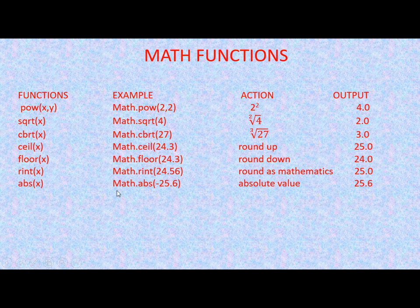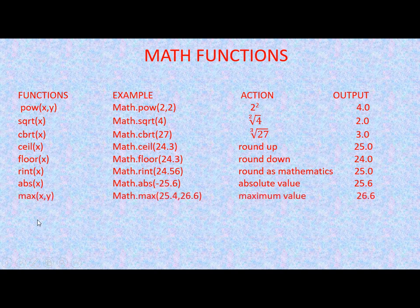The next function is abs — absolute value. Math.abs returns the absolute value of a number. If the number is negative, this function removes the negative sign, so for example the absolute value of -25.6 is 25.6. If the number is positive, it is returned as-is. The absolute value of a negative number is simply the number without the negative sign.